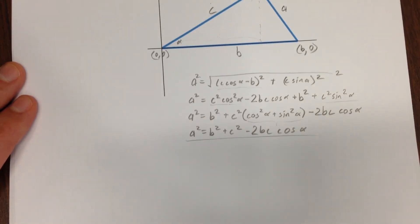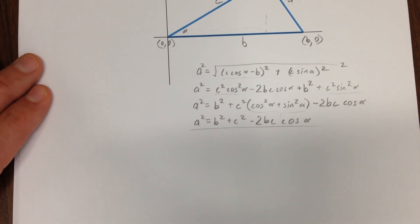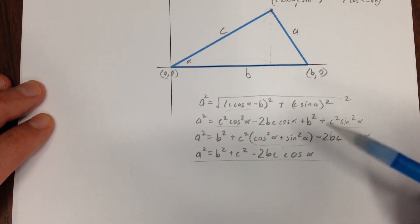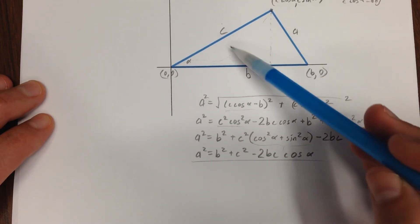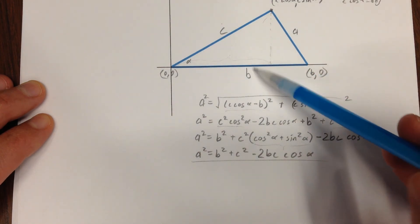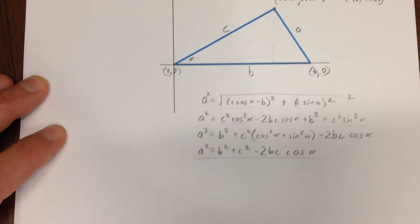That is the law of cosines. That's how without knowing a, just by knowing c, b, and the angle alpha, we can get to a.